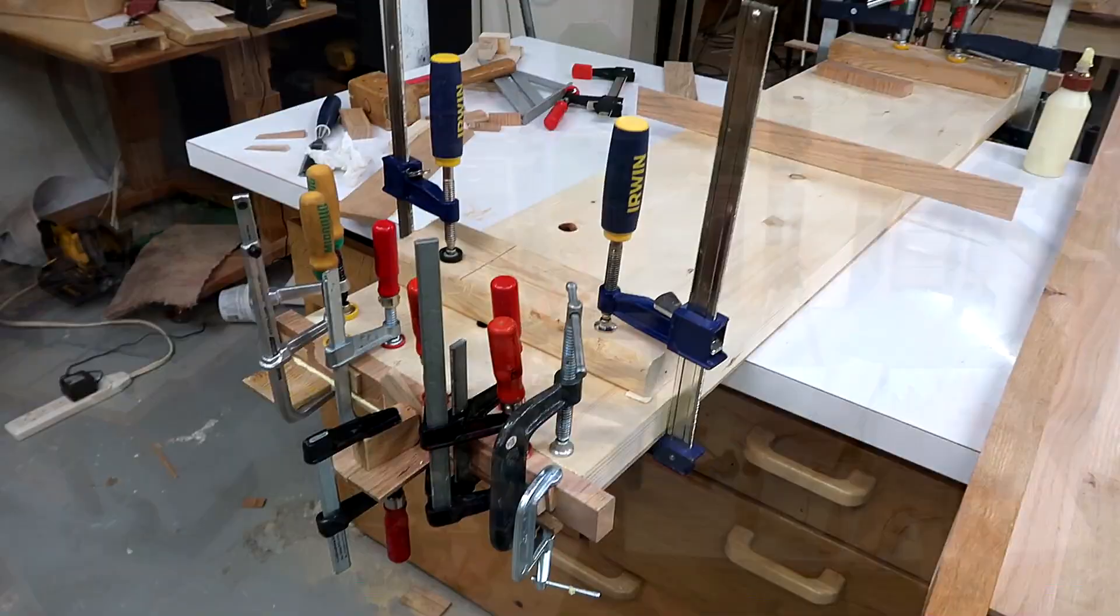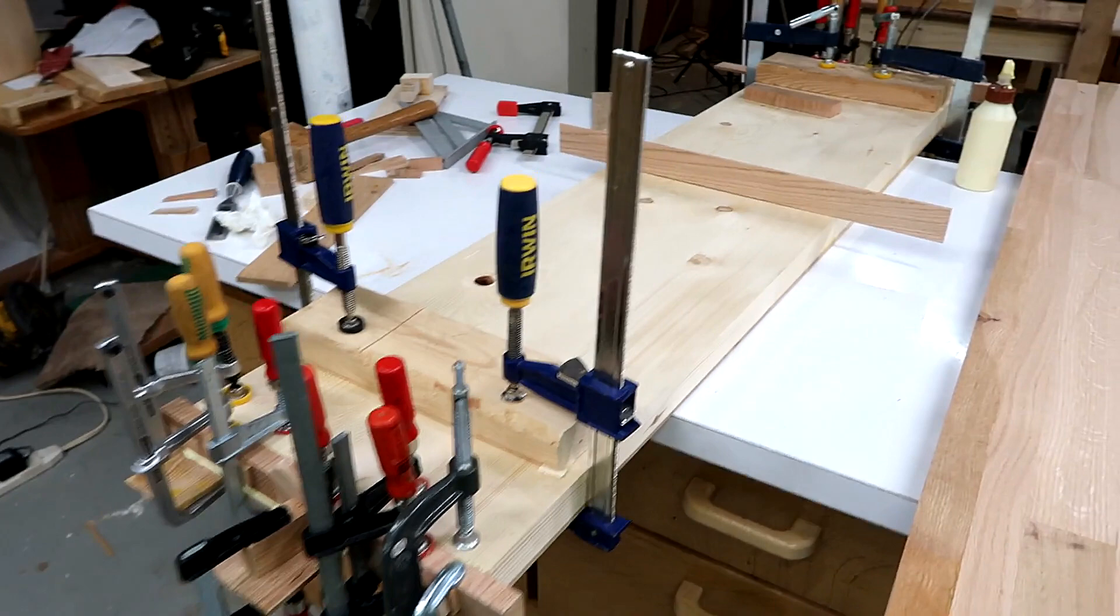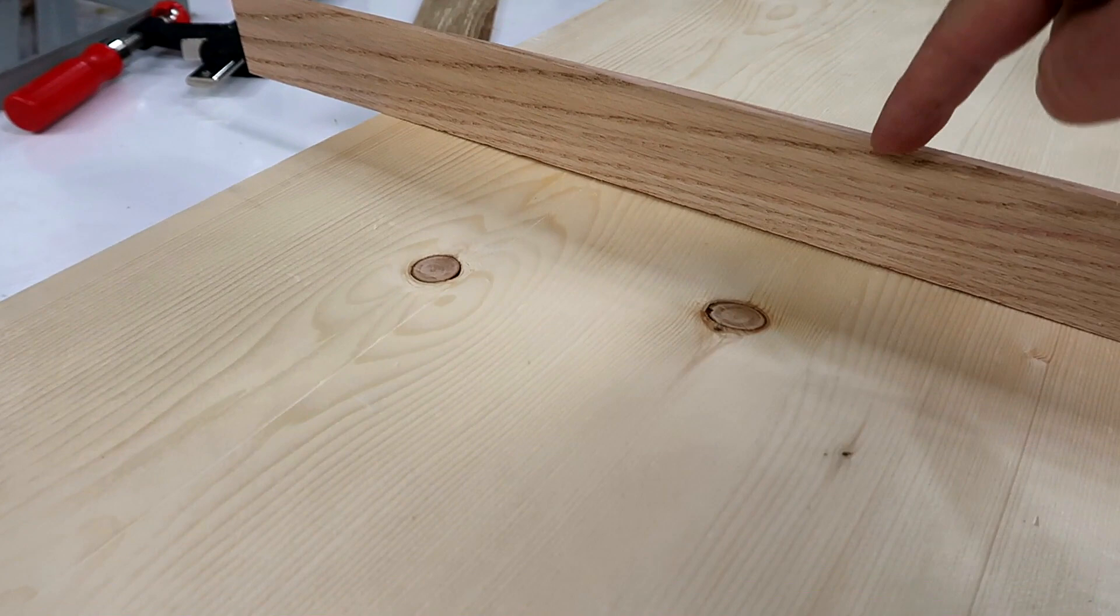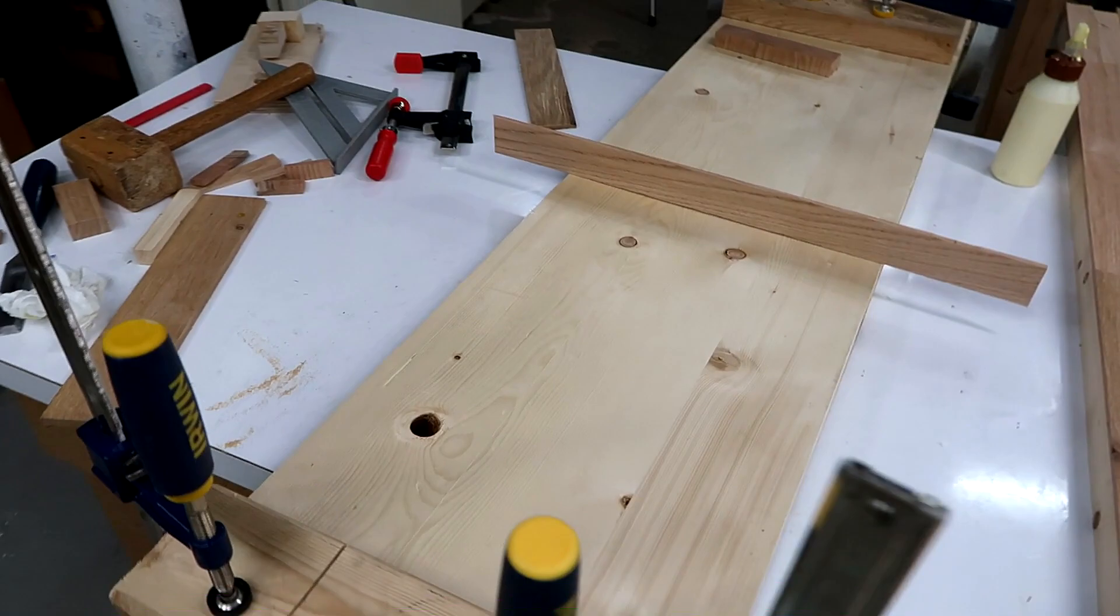This is getting into woodworking geekery, but this board has cupped on me a little bit. You can see there's a gap of about a millimeter in the middle, so the whole board has gone this way a little bit, and it's gone even further than that actually, but I clamped these cauls onto the ends so at least the end would be straight while I glued these bits on there.